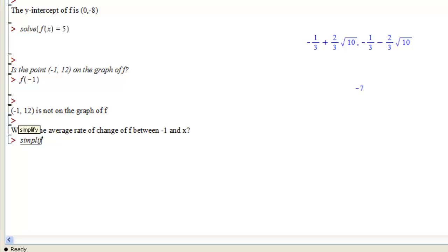If I want to find what is the average rate of change between minus 1 and x, then I would find the simplification of the expression f of x minus f of negative 1 over x minus negative 1. And I see that 3x minus 1 is the average rate of change between minus 1 and whatever x is.